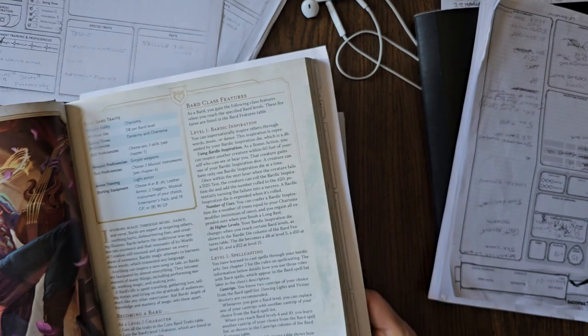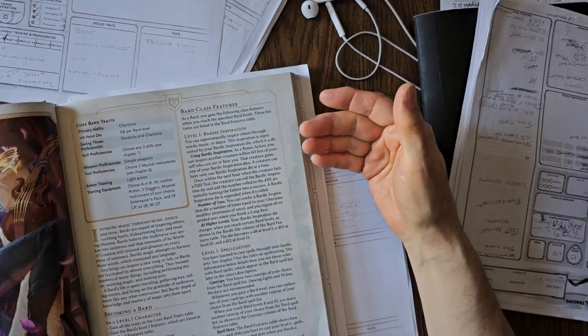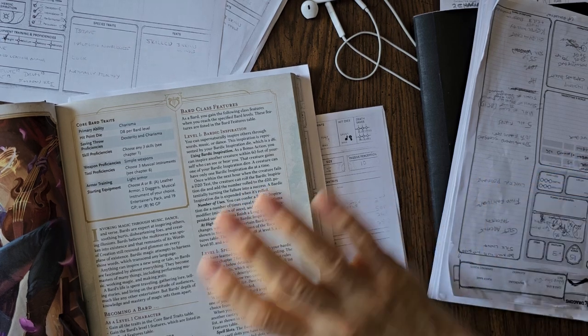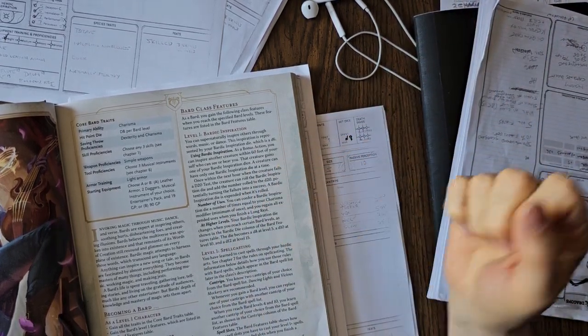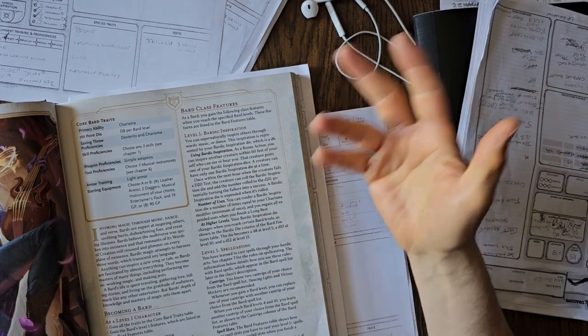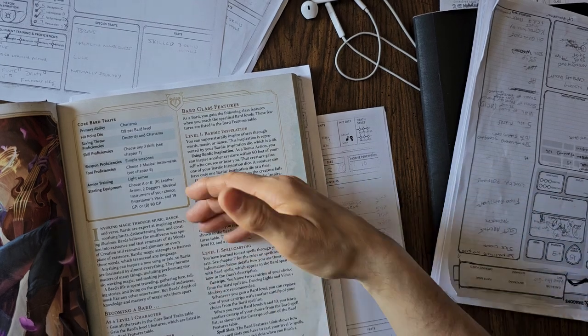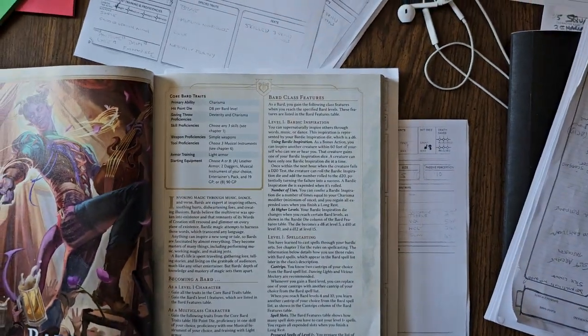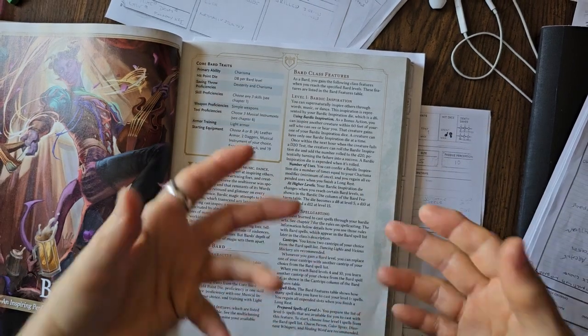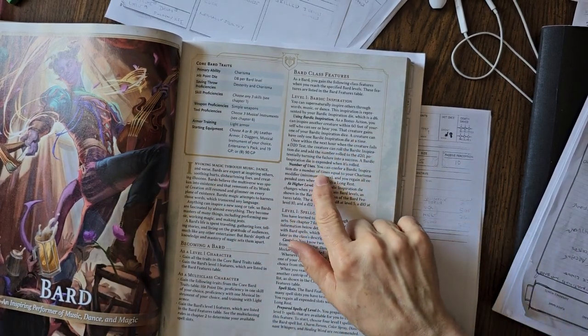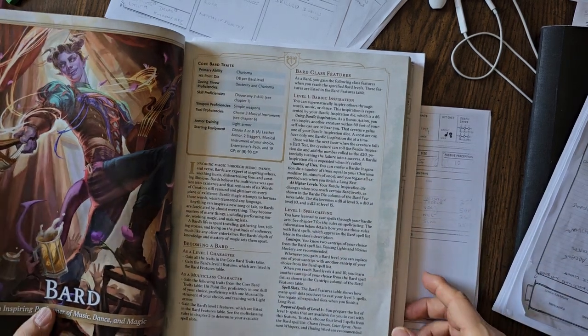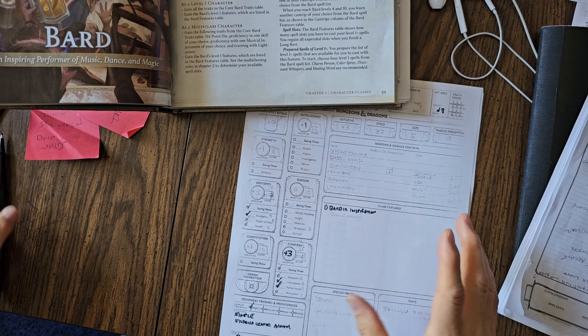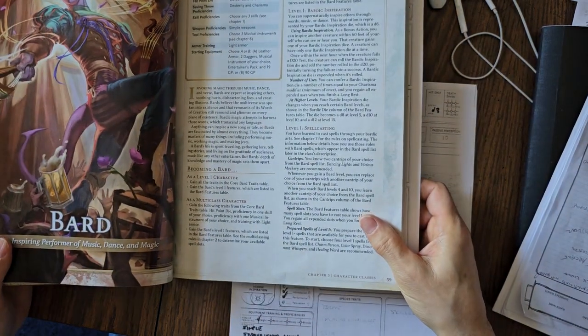Basically, there are times when you can do things with that die. For instance, you can use your bardic inspiration to inspire another character and give that die to another character. Say your friend the paladin is in combat. You can give bardic inspiration to the paladin. So they get a d6. If the paladin rolls a 14 and they need a 15 to hit, they can roll that d6 on top and add the result of that die roll to their attack roll. You're buffing your characters. You're a support character at that point. You can use that equal to the number of times your charisma modifier until you have a long rest.